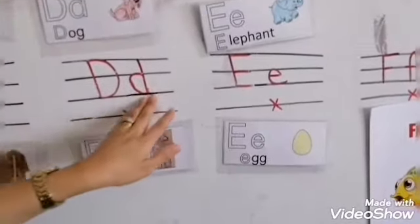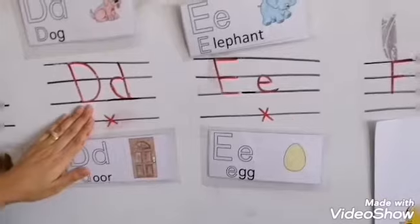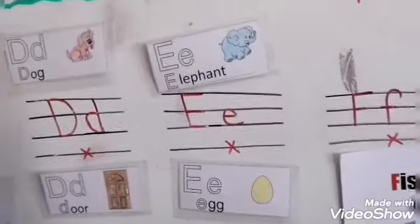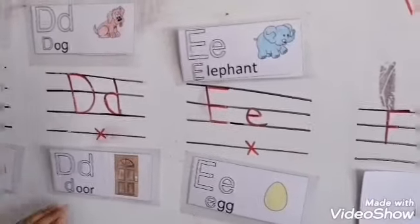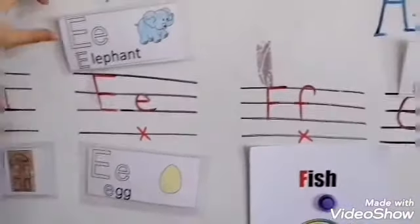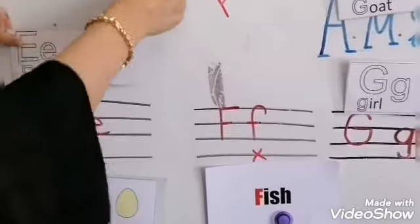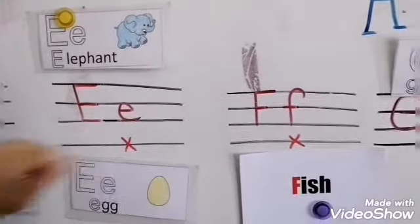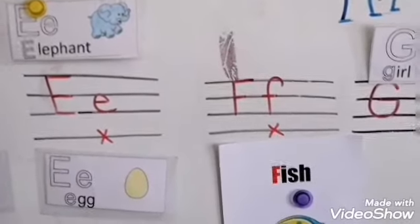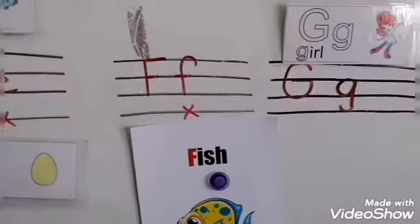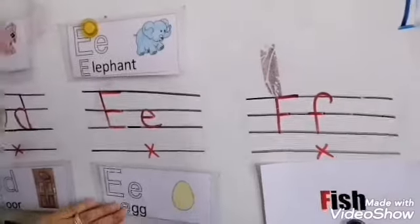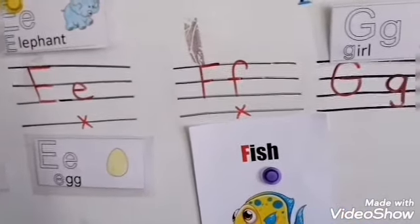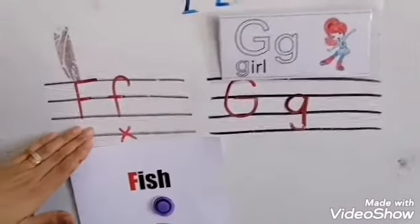Capital D, small d. D — dog, door. Capital E, small e — elephant, egg. Excellent.